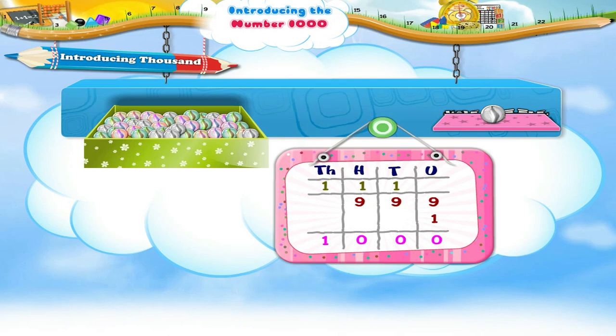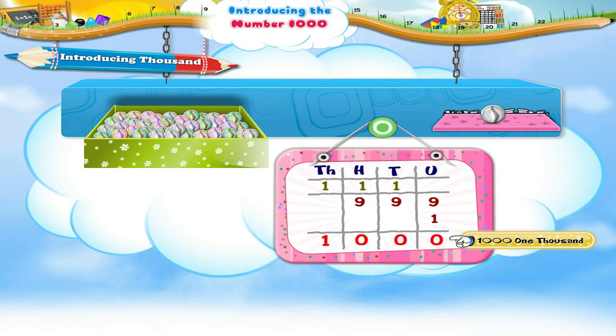So we get a new number: 1, 0, 0, 0. We call it 1000. T-H-O-U-S-A-N-D. 1000 is a 4-digit number.